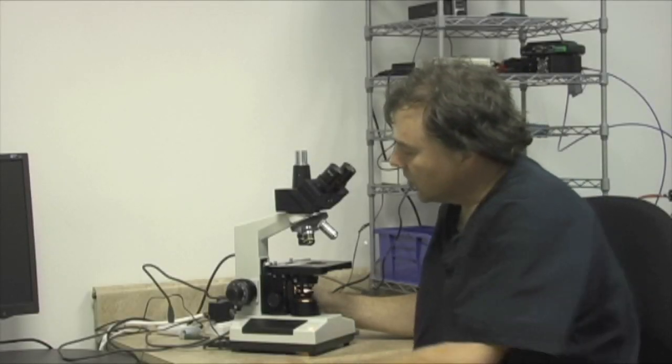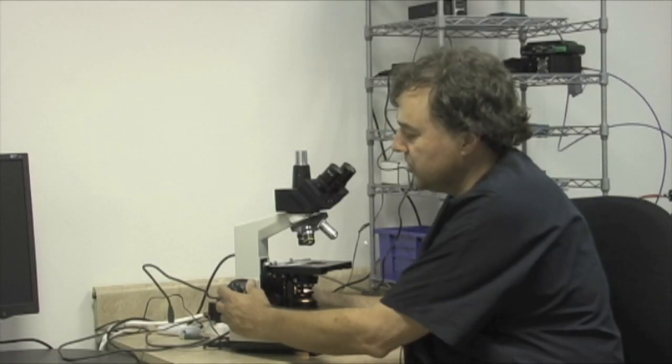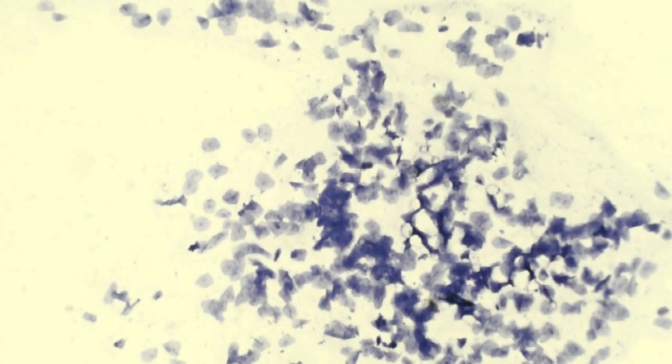Now we're going to slowly raise, using the coarse focus, the large knob. We're going to slowly raise the stage up until the specimen just comes into focus. Then we're going to use the fine focus knob to get a sharp image, and again this is done with the four power lens.